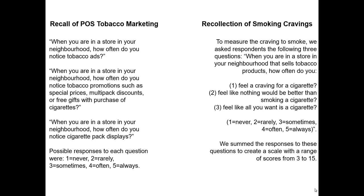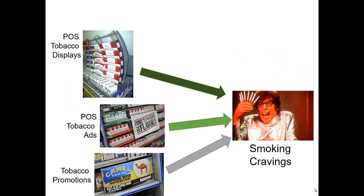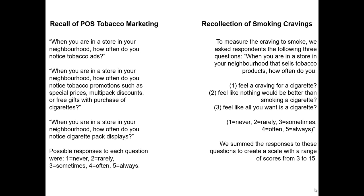For example, look at the first question: 'When you are in a store in your neighborhood, how often do you notice tobacco ads?' The respondent answered on a one-to-five scale, never to always. These three different measures correspond to tobacco displays, tobacco ads, and tobacco promotions. So again, it wasn't their actual exposure — it was their recollection of exposure.